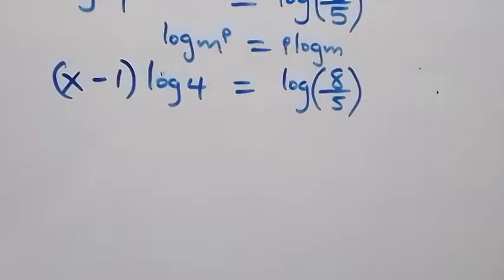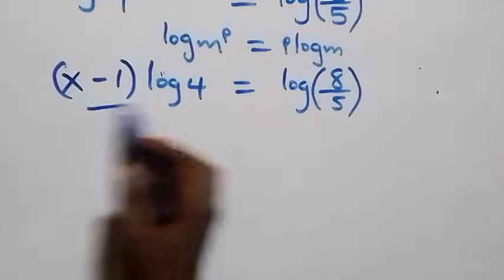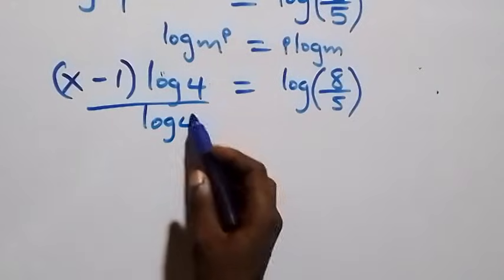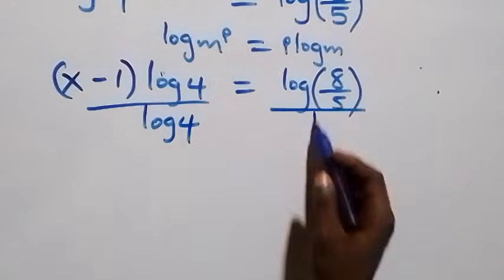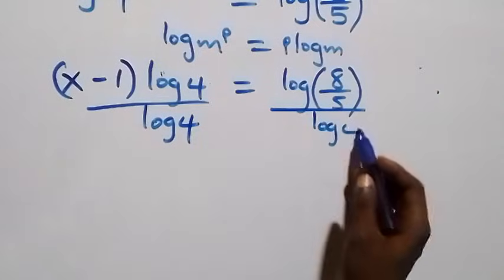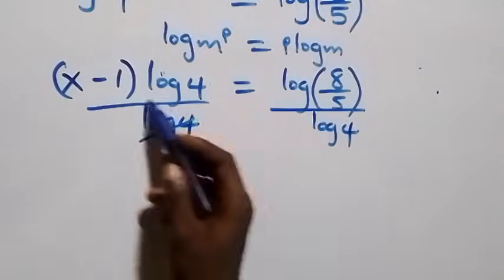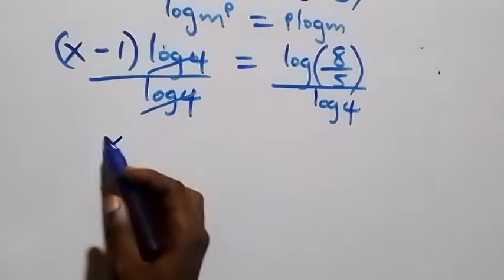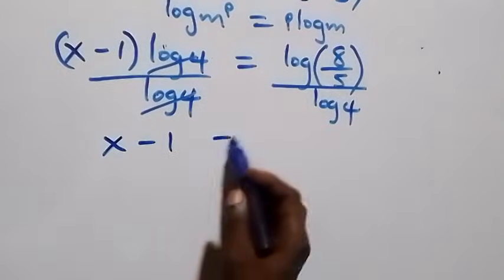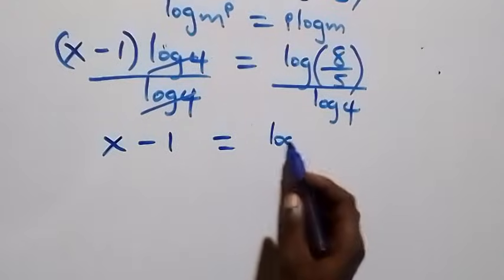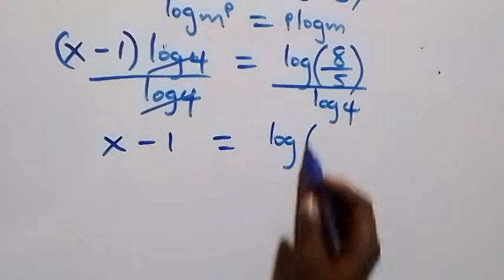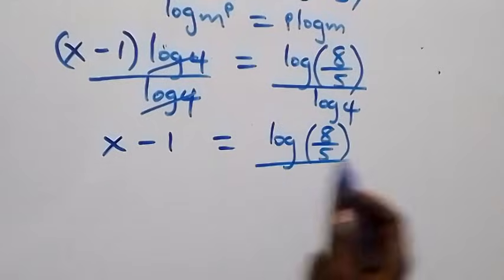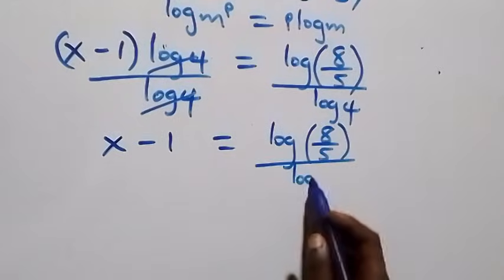Then next step, we divide both sides by log 4. That is, divide this side by log 4, also divide this side by log 4 — the log 4s cancel each other. Then we have x minus 1 equals to log(8/5) divided by log 4.